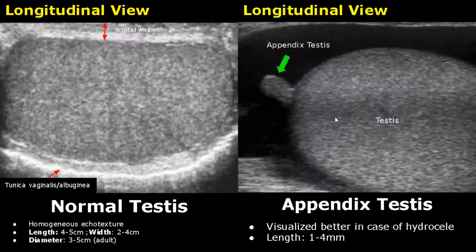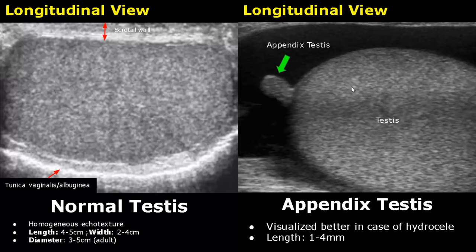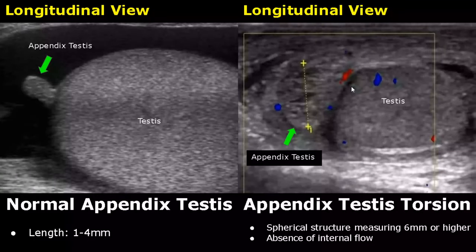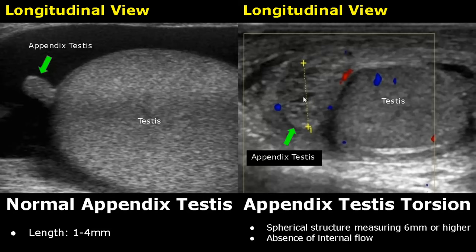Appendix testis is an accessory testicular tissue found between the upper pole of the testes and the head of the epididymis. It is more easily visualized when there is a hydrocele and can measure 1 to 4 millimeters in length. In torsion of appendix testis it is enlarged and can measure 6 millimeters or more. There will be absence of internal flow on Doppler, which is a feature that tells us there is torsion of the appendix testis.